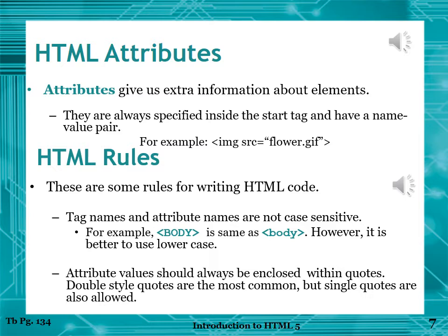HTML Attributes: Attributes give us extra information about the element. They are always specified inside the starting tag and have a name-value pair. For example, the language attribute of the HTML tag specifies the language of the web page, while the title attribute specifies the title of the paragraph. The src (source) attribute of the image tag is used to specify the URL of the image — for example: img src equals flower.gif — which gives the source of the image.